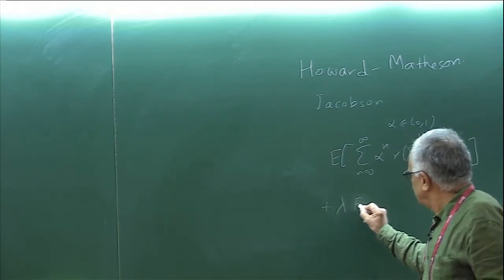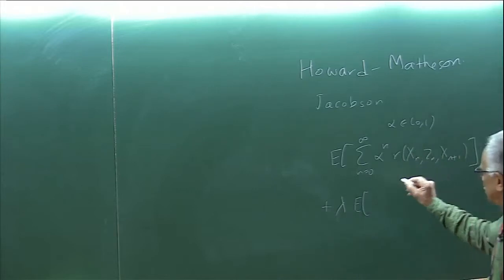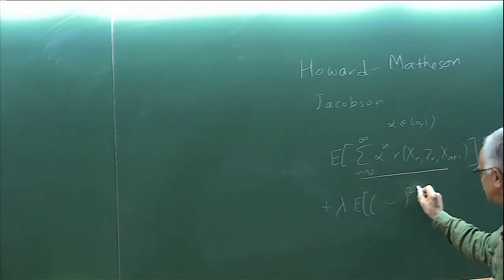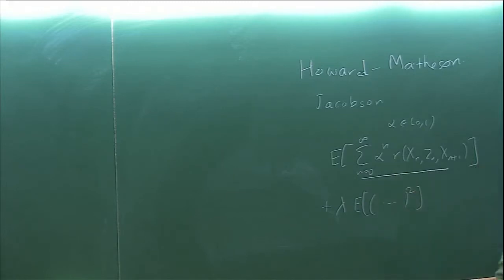They had kind of ad hoc modifications such as expected value plus variance. This is the sample cost, this is the expectation, and then you take its variance. For example, this Markowitz formulation has this flavor.